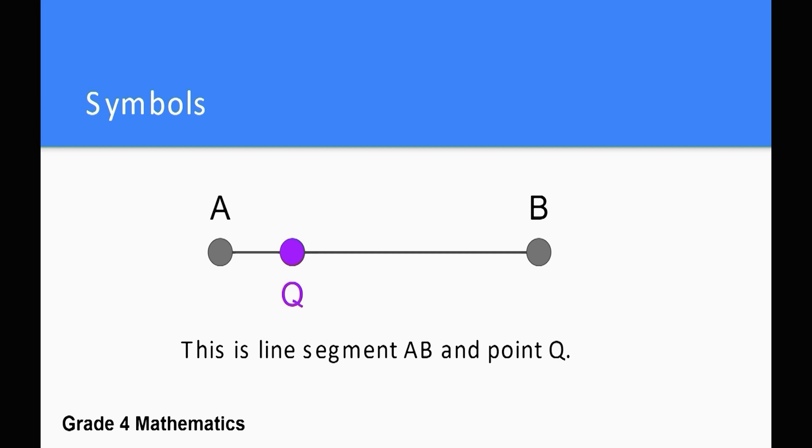Mathematicians have a shorter way to write it too. It looks like this. The letters identifying the line segment are written with a small line above them to indicate this is line segment AB. Name the end points on your line with letters. Now write the symbol that mathematicians use to name your line segment. Don't forget the little line across the top of the two letters.